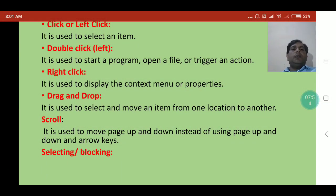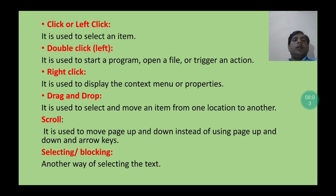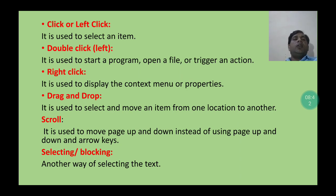Another important function of the mouse is selecting, also called blocking. Blocking or selecting is another way of selecting text in a document using the left mouse click. Suppose we have to select a group of text, some lines, or paragraphs — just place the mouse cursor before the text and drag it in any direction, such as downward, to select the data. The data will be selected up to where we drag the mouse, and releasing the mouse stops the selection.